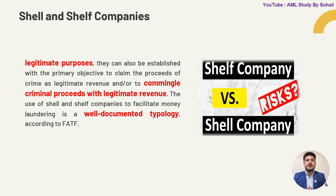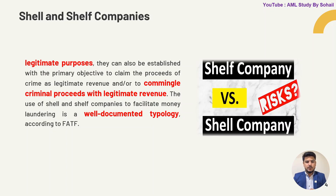These companies can be established with the primary objective to commingle criminal proceeds with legitimate revenue. For example, one person owns a petrol pump and has also earned money from illegal resources like drugs. He can commingle that money by showing it was earned from the petrol pump. This is how they commingle criminal proceeds with legitimate revenue. The use of shell and shelf companies to facilitate money laundering is a well-documented typology.